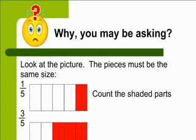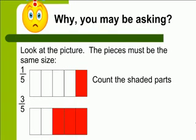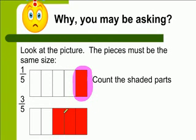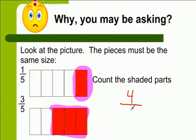Look at the picture to understand why 1 fifth plus 3 fifths equals 4 fifths. All the pieces must be the same size. Here is 1 fifth colored in, and here is 3 fifths. Because they're the same size pieces, we just count the shaded parts: 1, 2, 3, 4. We have 4 shaded parts and 5 pieces altogether, giving us 4 fifths.